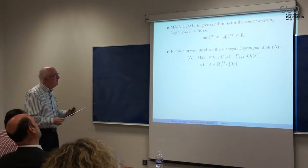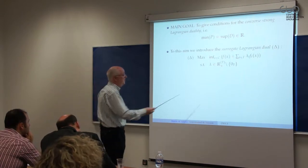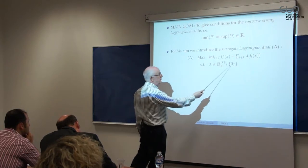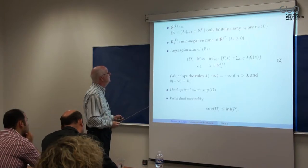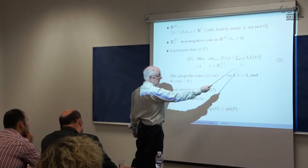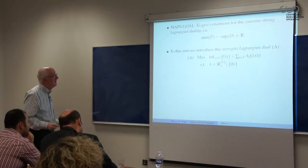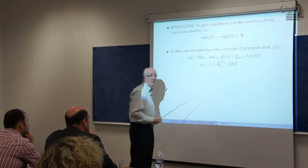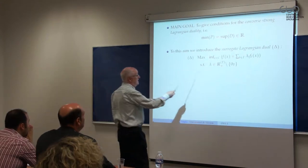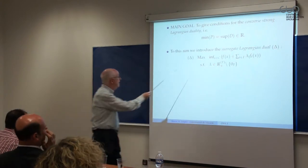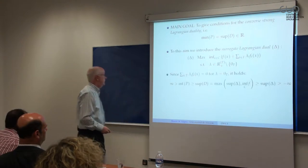To this aim, we rely on a couple of modifications of the standard Lagrangian dual. This first modification is very similar to the standard dual, but we exclude the possibility of lambda being identically zero. In the standard dual, lambda can be zero, reducing the first-level objective to just the objective function f. In this surrogate or modified Lagrangian dual, we preclude lambda being zero. That means we are considering fewer feasible solutions in the second-level problem, so this maximum is less than or equal to the standard Lagrangian dual optimal value.